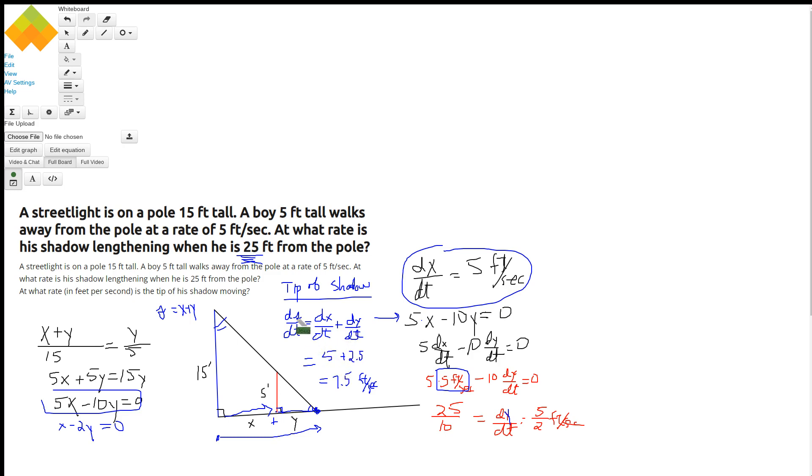So to get how fast the tip of the shadow is moving, we just add these two together. So 7.5 feet per second.